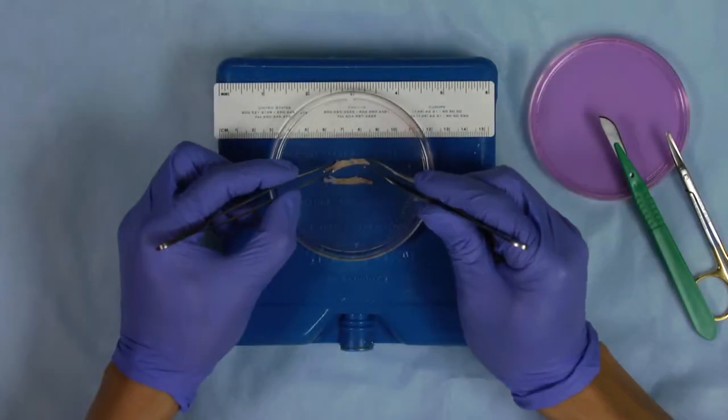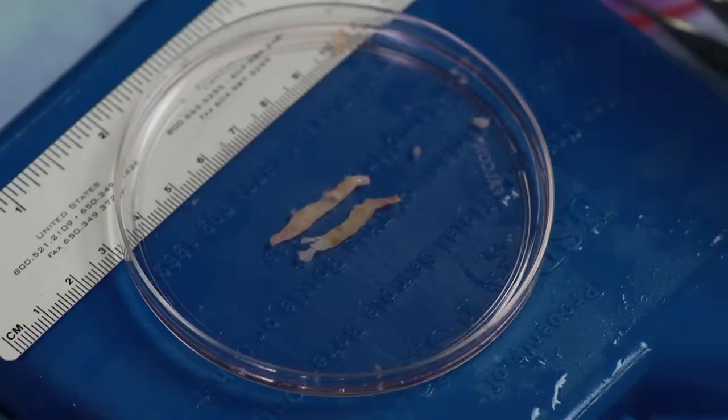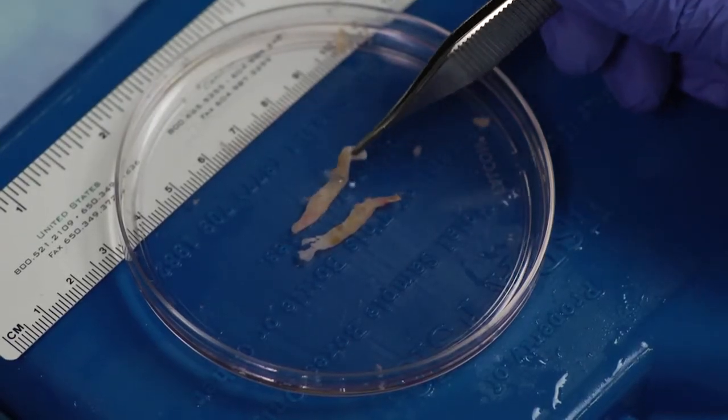Count the number of cortical strips and then divide the strips between patient use and research. Follow the Form 4 for additional research handling instruction.